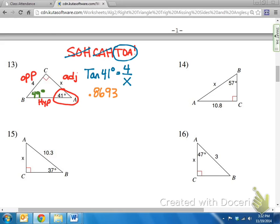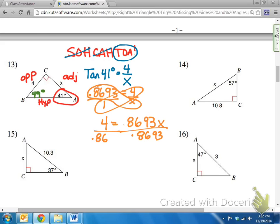So .8693 equals 4 over X. So that's what tangent of 41 degrees is. It is that decimal. So now, I just set up my proportion, cross multiply, and solve from there. So, I'm going to have 1 times 4 is 4, equals .8693X. And to get X by itself, we divide by .8693.